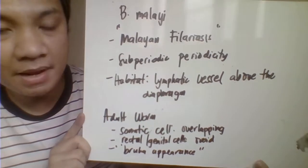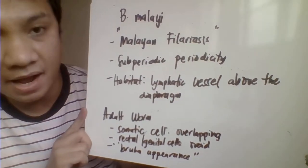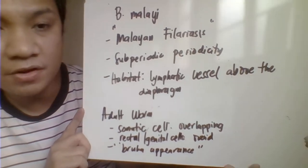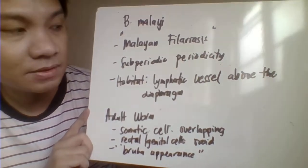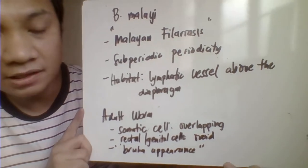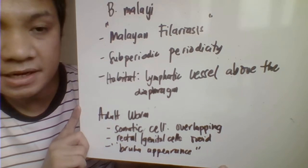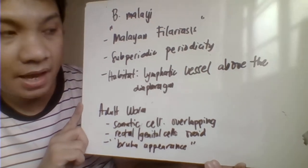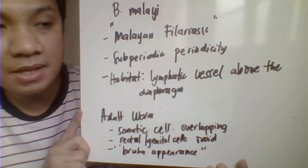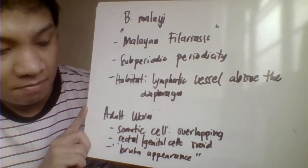The next species is Brugia malayi, also called Malayan filariasis. Its periodicity is subperiodic. The vectors include Aedes, Anopheles, Mansonia, and Armigeres mosquitoes. For the habitat, adult worms inhabit the lymphatic vessels above the diaphragm.